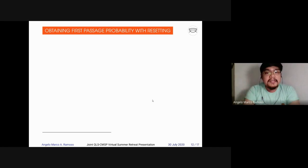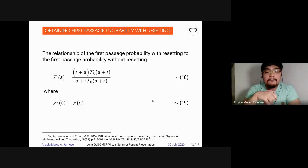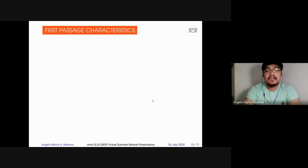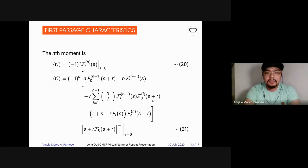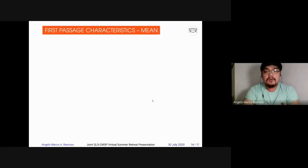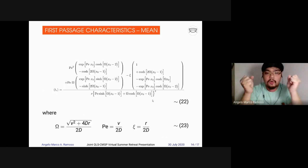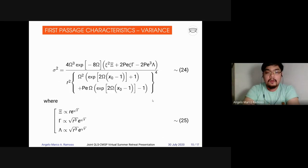To get the first passage probability with the setting, with this paper by Pal, we obtain this equation 18, where the relationship of first passage time without the setting and first passage time with the setting, we obtain this equation such that we will be able to get our the characteristics of the first passage. The nth moment is given by this one. Equation 20 is the definition, and equation 21 is using our previous equation. From this, we will be able to get the first passage characteristics mean, the first moment. It is given by this equation. It is actually very long. So, we use equation 23 to simplify our equation. And then this is the second moment, the variance.